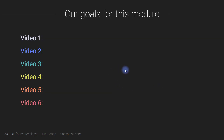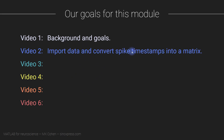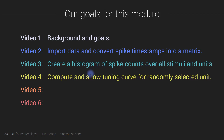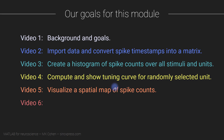All right, so this was the first video of this module. The rest of the videos are going to be focused on MATLAB work. In the next video we're going to import the data, then we will create some histograms of spike counts, and in video four we are going to create tuning curves like what I showed a few slides ago. In the final two videos we will create some spatial maps so we can visualize how the different features of the data are distributed over the spatial grid of the Utah array.